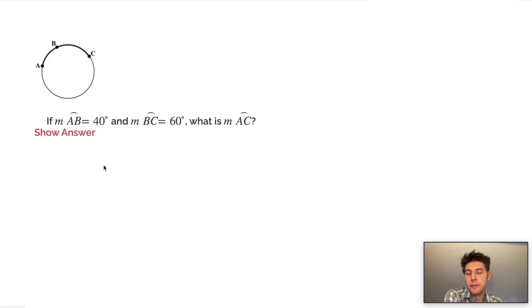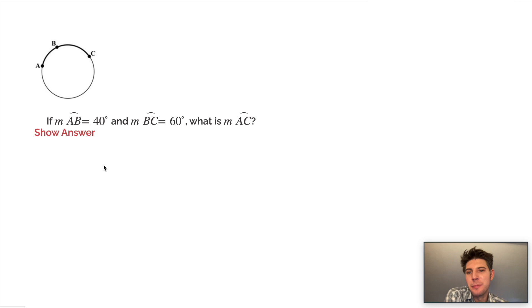So we can do a quick practice problem. If the measure of arc AB equals 40 degrees and the measure of arc BC equals 60 degrees, what is the measure of arc AC?